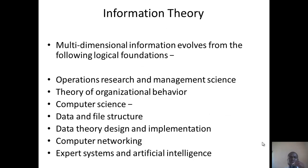Now let's look at basic information theory. Multi-dimensional information evolved from many areas. One of them is operations research or operations and management research, organizational behavior. In computer science, we are interested in data and file structure, data theory design and implementation, and computer networking — because most of these information systems are stored on a network. We also have expert systems and artificial intelligence, especially at the top management level, such as management information systems and decision support systems. We'll talk about all of these later in the course.